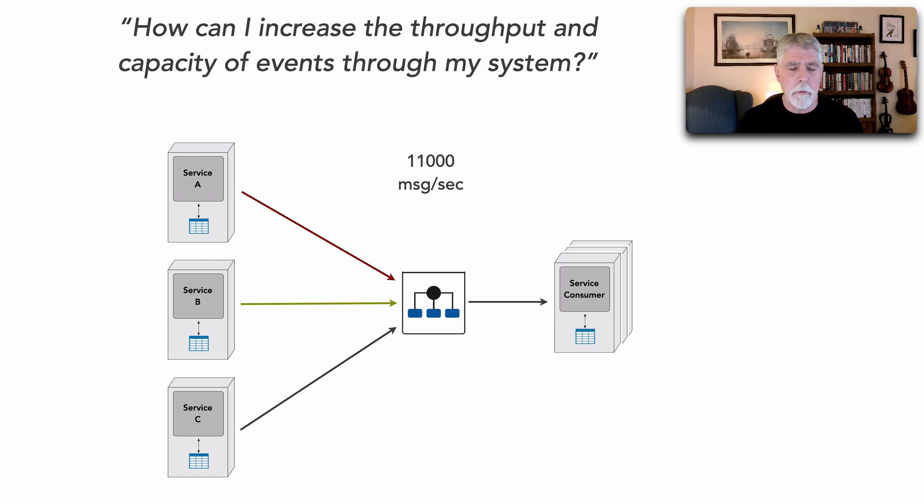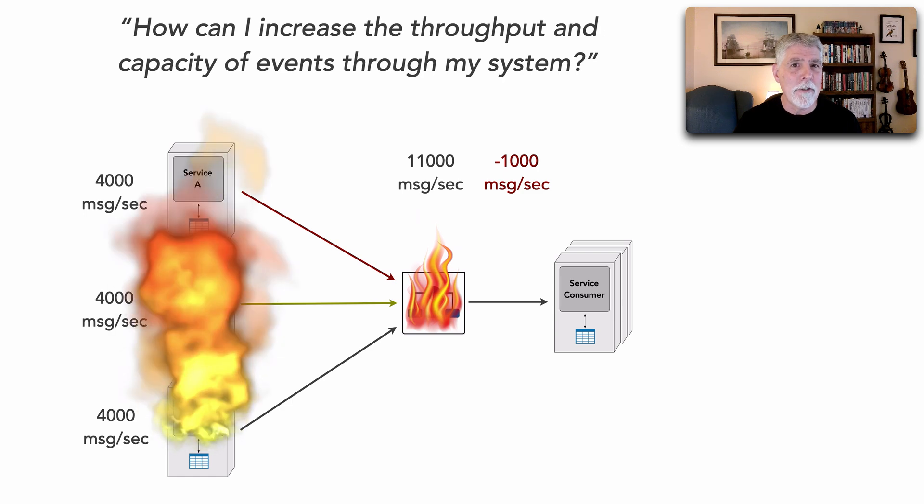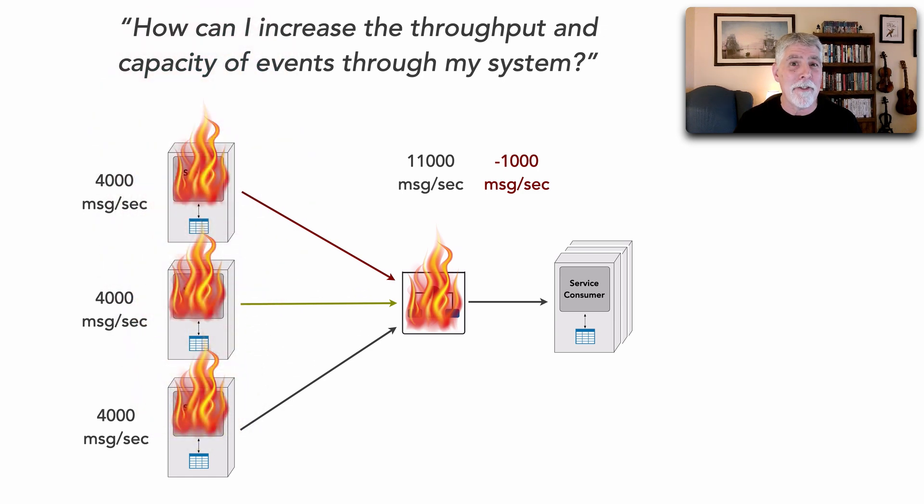The issue occurs when we have services that are sending an excess amount. For example, each service is sending four thousand messages a second to this broker. Well collectively that's 12,000 messages a second getting to that broker, which gives us a deficit of 1,000 messages a second. And of course the broker won't be able to keep up and will eventually crash, causing all of our services to correspondingly crash as well.